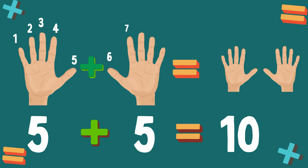Other hand: 6, 7, 8, 9, 10. Altogether we have 10 fingers in our two hands. 5 plus 5 is equal to 10.